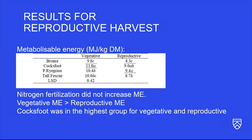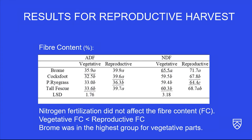Now for the results of the reproductive harvest quality: for metabolizable energy, cocksfoot had higher values for both vegetative and reproductive parts, and nitrogen did not affect metabolizable energy. For fiber content — both ADF — cocksfoot was in the group with the lowest fiber content for vegetative components.